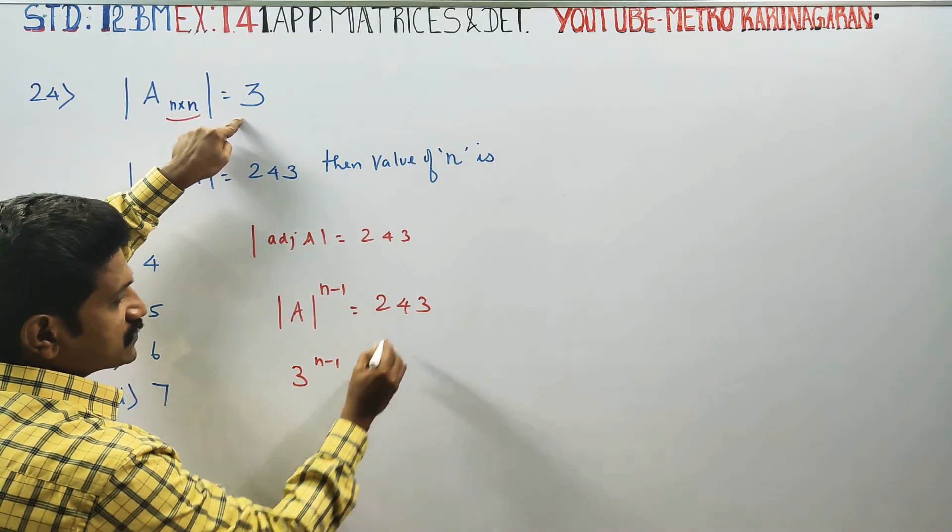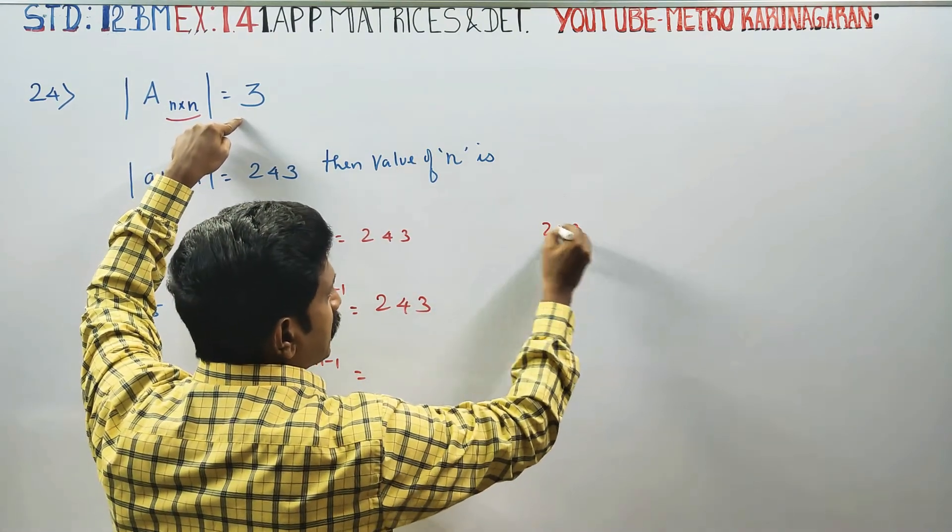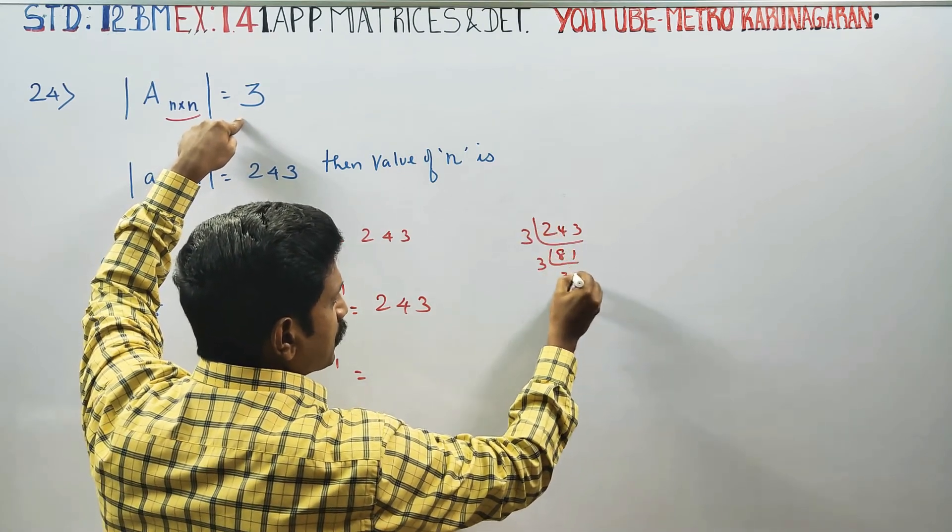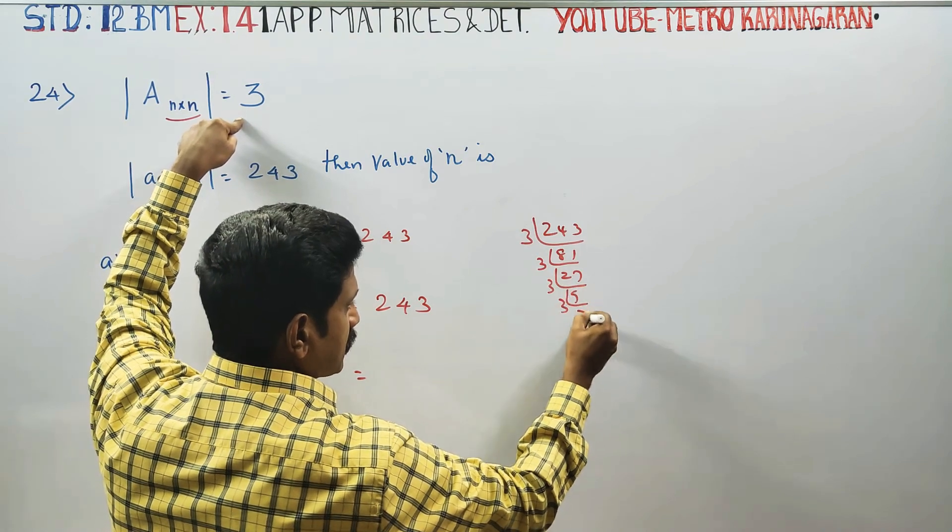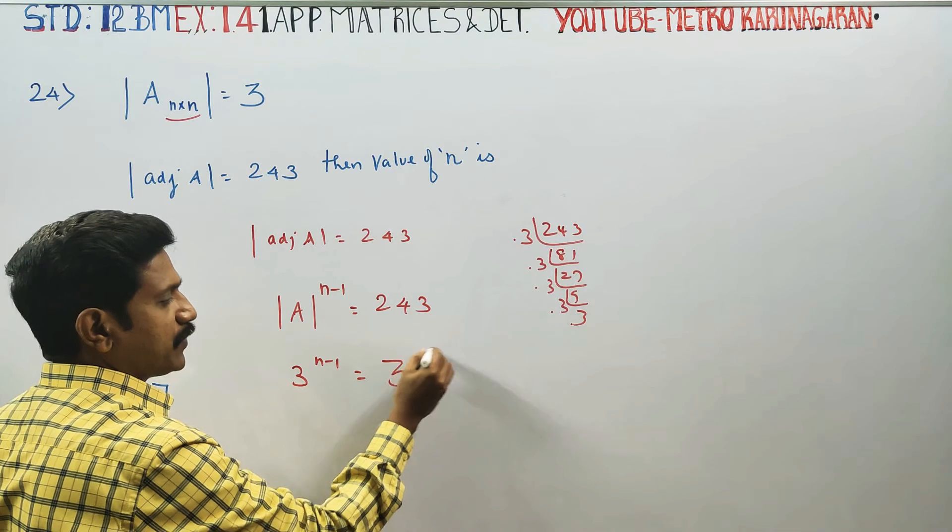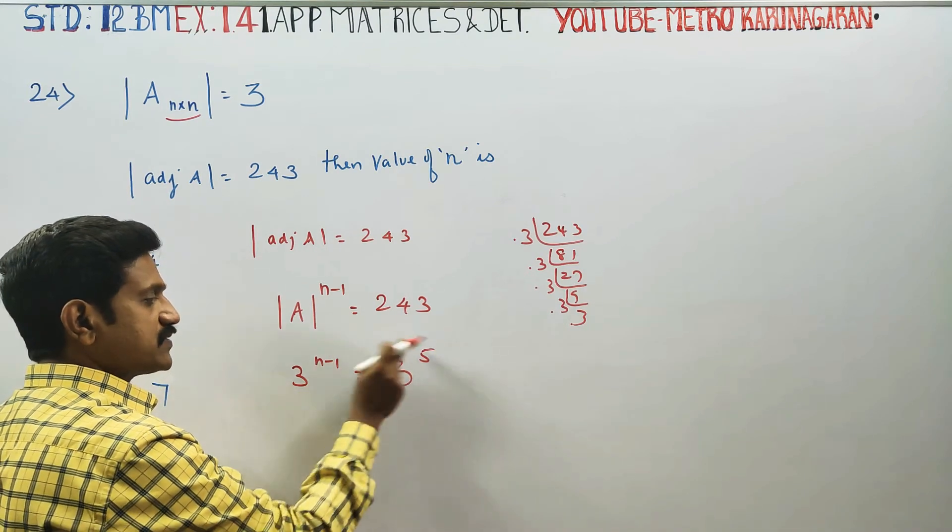So 3 to the power n-1 equals 243. If you break down 243 by dividing by 3: 81, then 27, then 9, then 3, then 1. That's 1, 2, 3, 4, 5 - so 3 to the power 5. When bases are equal, powers are equal.